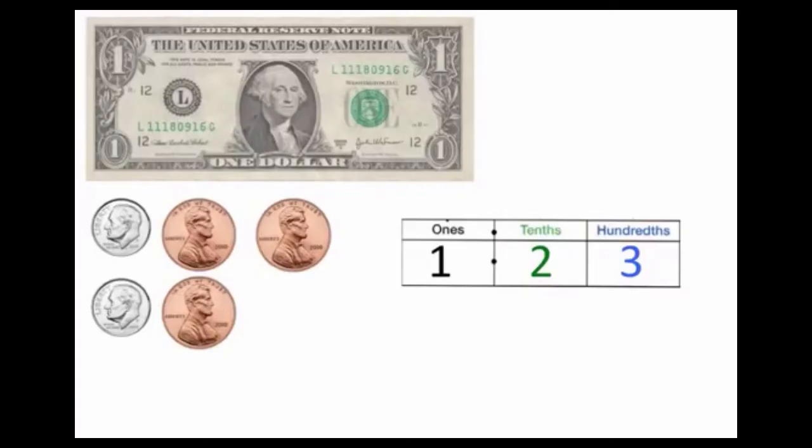Now let's try this. If I was to count this money here, I have one dollar, two dimes, and three pennies. It is worth one dollar and twenty-three cents. It has one whole, two-tenths, and three-hundredths.